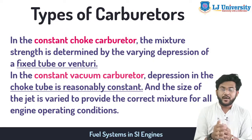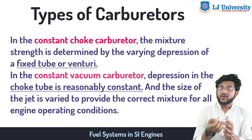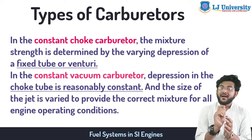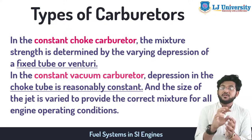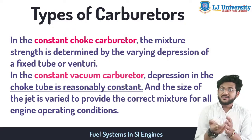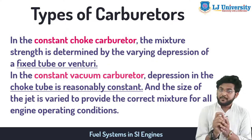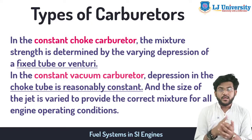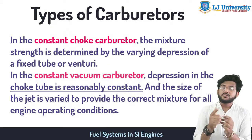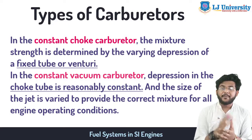In a constant vacuum carburetor — sometimes also known as a variable choke or variable venturi carburetor — the air and fuel flow areas are varied as per demand. The air speed is set to ensure good atomization of fuel over the full engine speed range. Under all running conditions, the pressure depression — or vacuum — is maintained constant. This overcomes the need for the compensating devices used in a constant choke carburetor. An example of this type is the Carter carburetor.